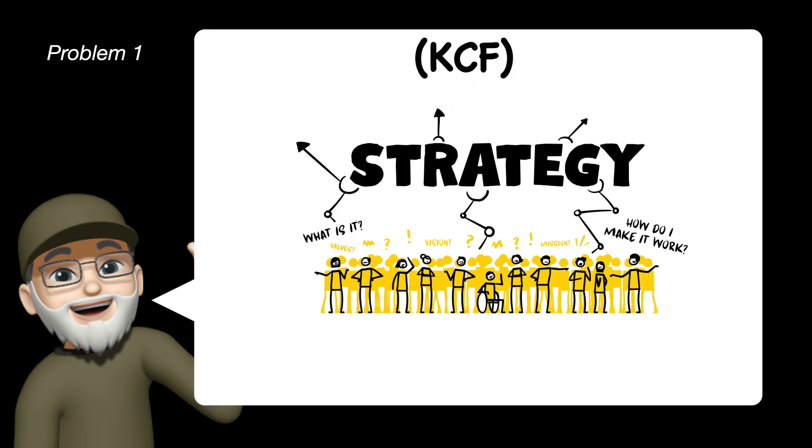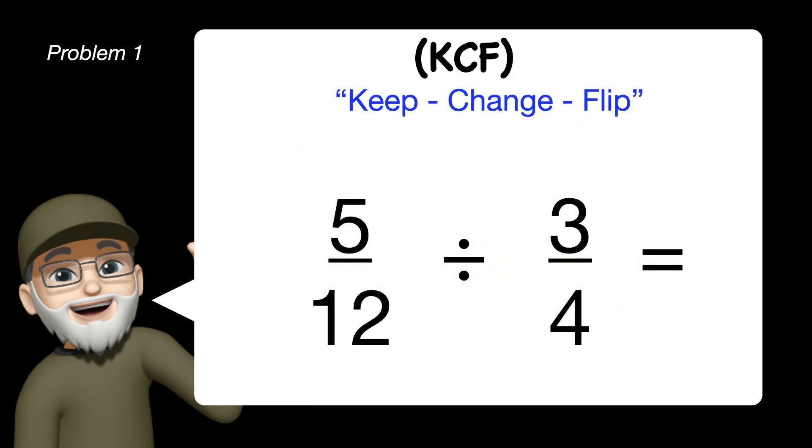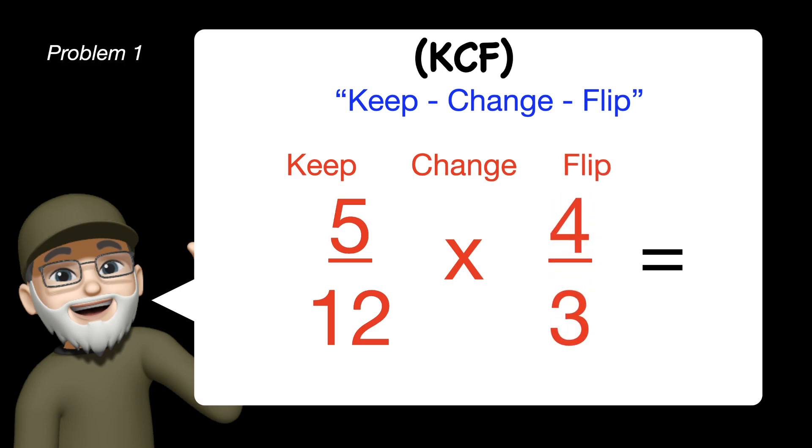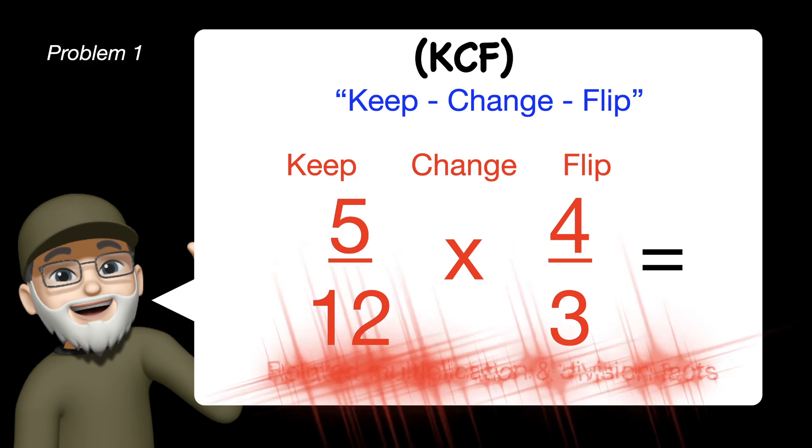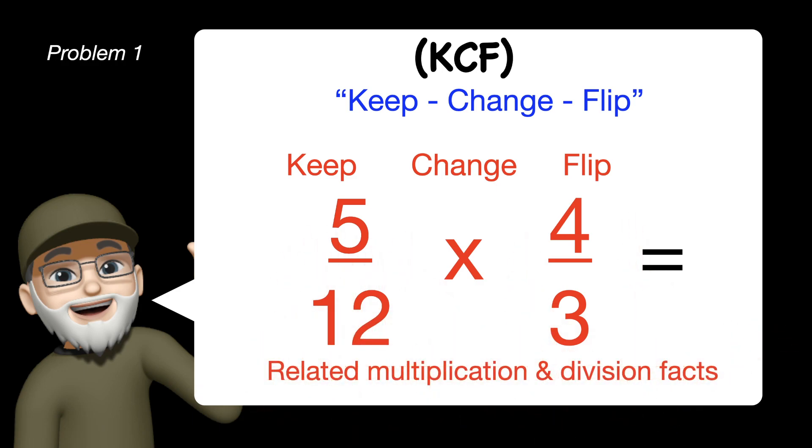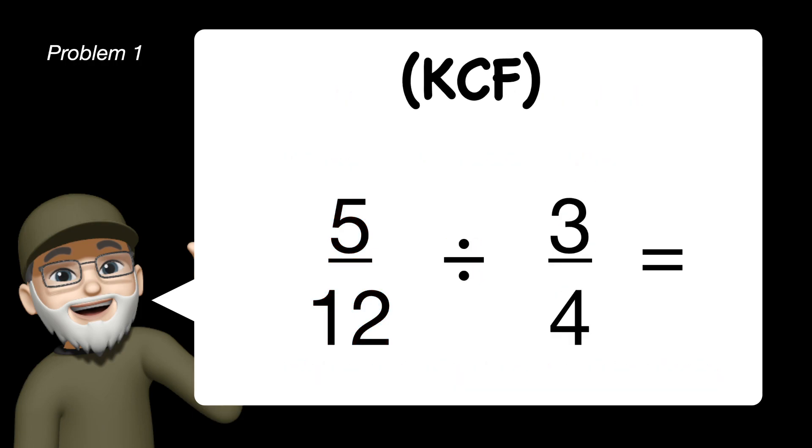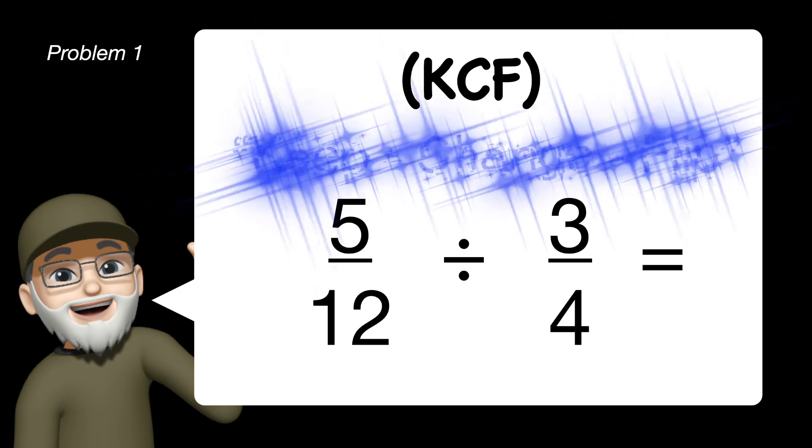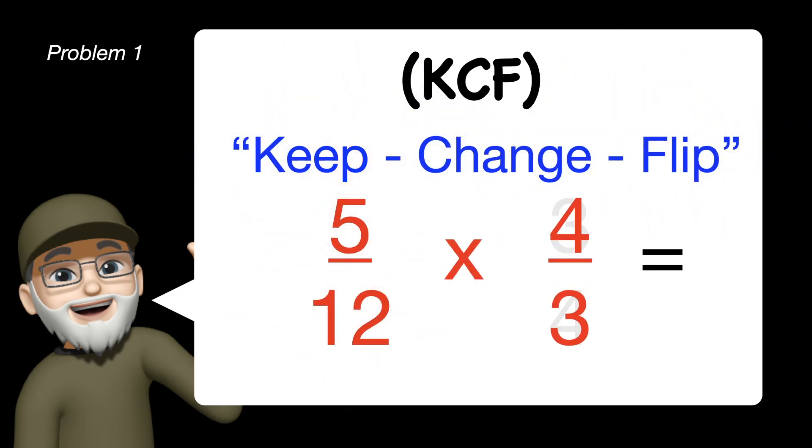We'll be using a KCF strategy today for this type of problem. K stands for keep, C stands for change, and the F stands for flip. We keep the first fraction the same, we change division into multiplication, and we flip the second fraction over into its reciprocal. We can do the change and flip parts because of related multiplication and division facts make it easier to do this type of problem. So KCF stands for keep, change, and flip.